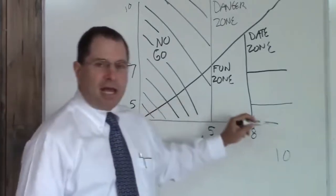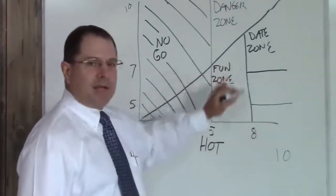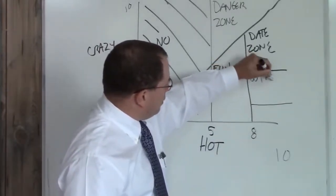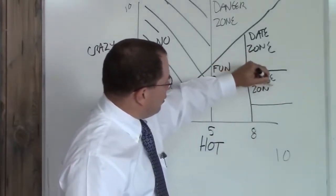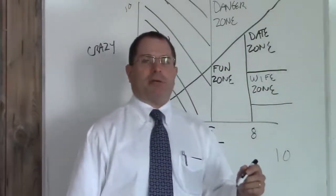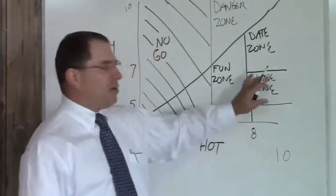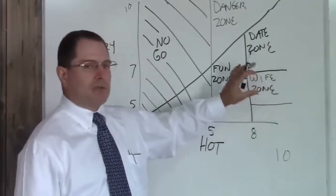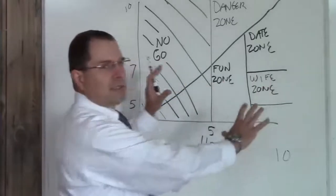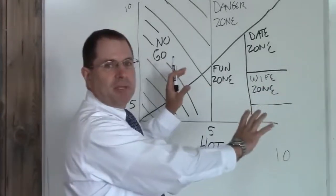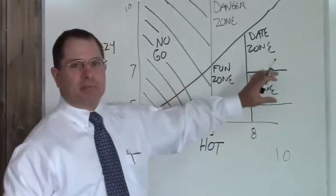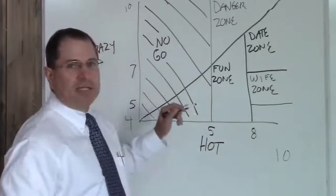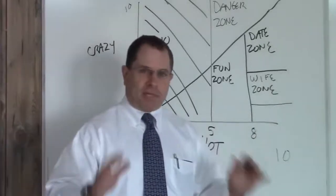Above an eight hot and between about a seven and a five crazy, this is your wife zone. When you meet this girl you should consider a long-term relationship. This zone is not scaled to size - this is a representation, not a pie chart showing how many of these people are out there. You want to be five to seven crazy, above an eight hot. That's your wife zone.